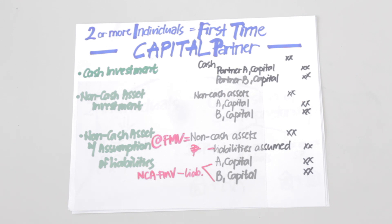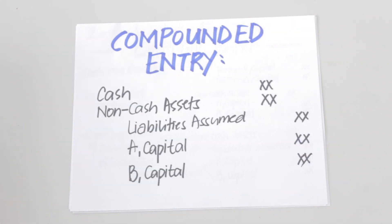It must be noted that the non-cash asset would be debited at its fair market value. The liability account would be credited at the balance assumed by the partnership, although capital would be credited at the net amount — the difference between the non-cash asset's fair market value and the amount of liabilities assumed. To make things easier, you can simply compound the entries: debit cash and non-cash assets for their respective amounts, and credit all liabilities assumed and the capital accounts.